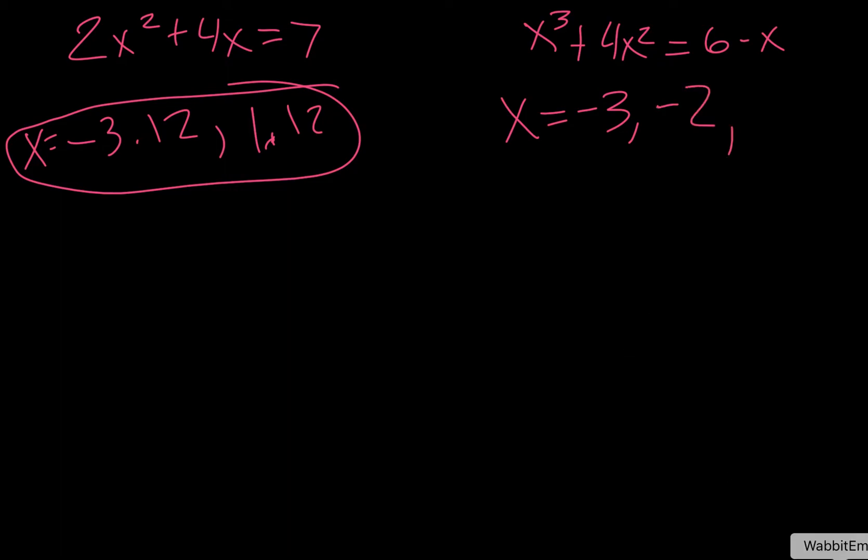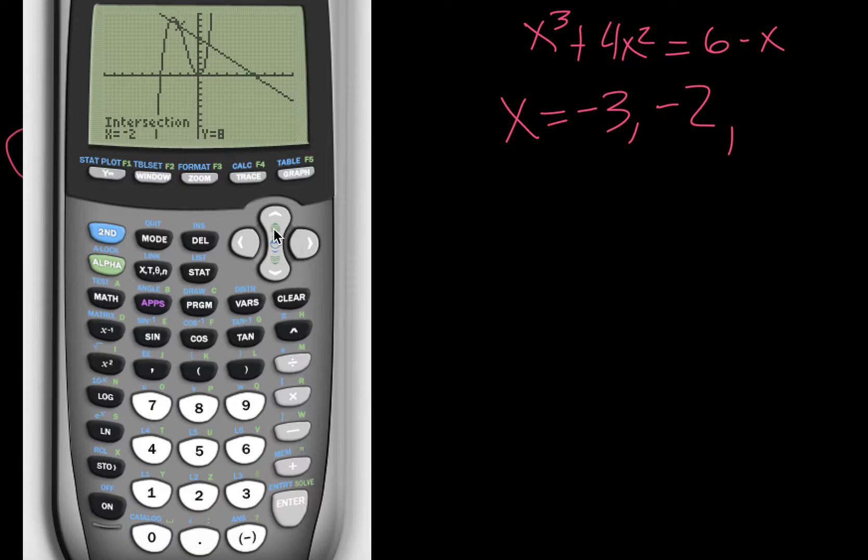And we have one more intersection. So we go second, calc, 5, okay, first curve, second curve, and then try to click it right on where it intersects, and we get 1.